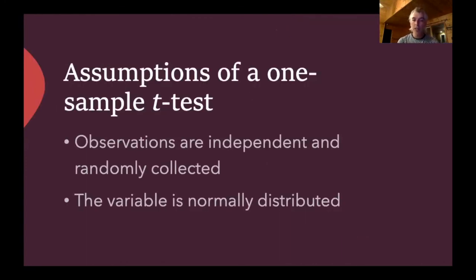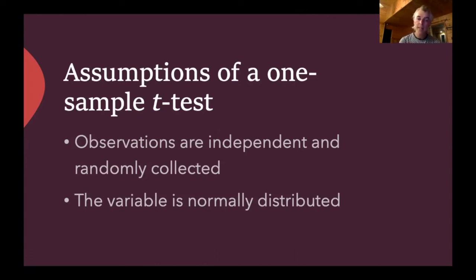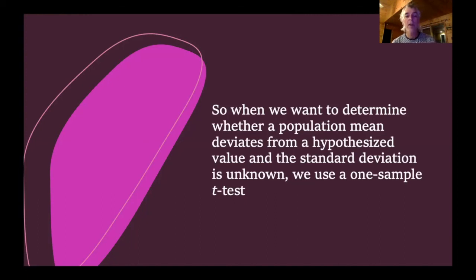We need to always consider the assumptions of our statistical test. The assumptions of a one-sample t-test are quite similar to those we've already dealt with. First, this test assumes that observations in our sample are independent of one another and randomly collected — a random subset of possible observations from our population. Second, the variable we measured must be normally distributed. If the variable is normally distributed, our sampling means will be normally distributed and we can use a t-test statistic to test our null hypothesis.